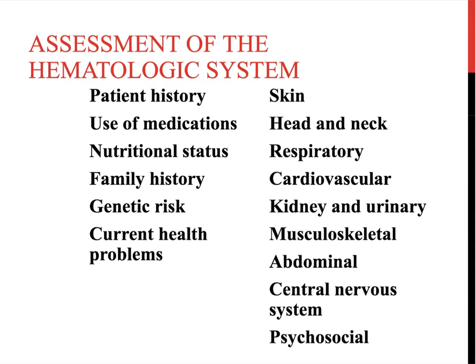Assessment of diet is important because red blood cells require adequate amounts of B12, iron, and folic acid. All three take part in the production of a normal functioning red blood cell. Without adequate amounts in the diet, the patient could result in an anemia — some of which we'll talk about.